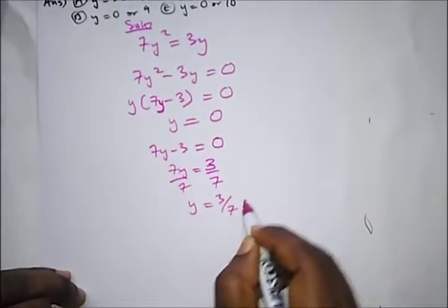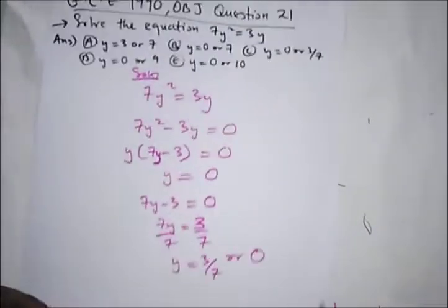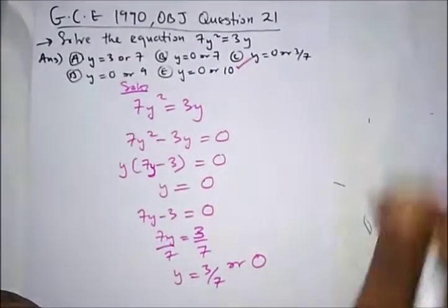Divided by 7, so we have y equal to 3 over 7 or 0. So our correct option is option c.